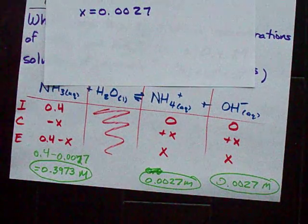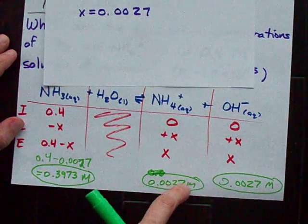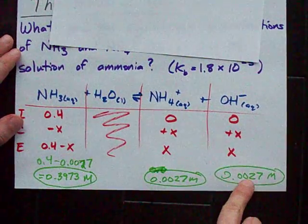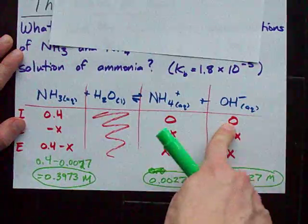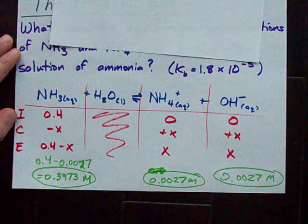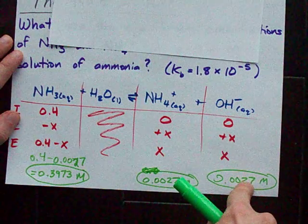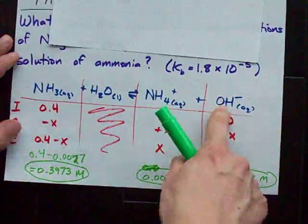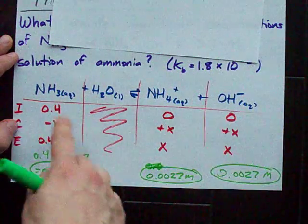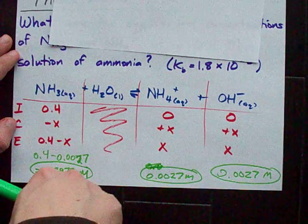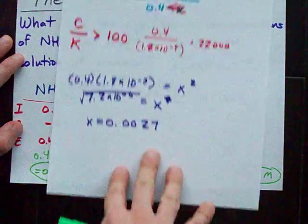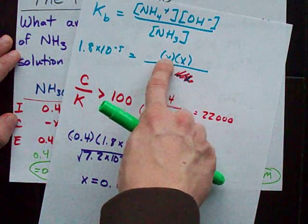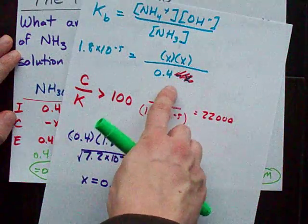Here's the last point I want to make. 0.0027 was insignificant relative to the 0.4. We proved that with the rule of 100. But it's not insignificant relative to the initial concentration of hydroxide, which was close to zero. This here is very significant when it's all we get in terms of forming hydroxide ions. But it's relatively insignificant when we're comparing it to the 0.4 that we start with of ammonia. That's why we're able to eliminate this x here. But we don't eliminate these x's here. We're only eliminating the x's that are added or subtracted from another value.